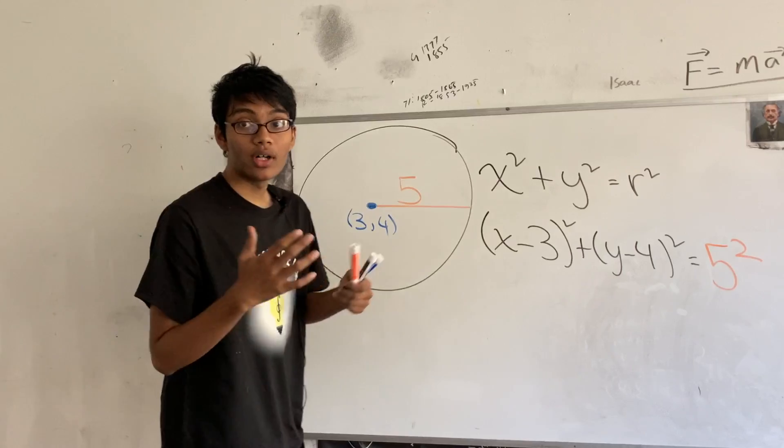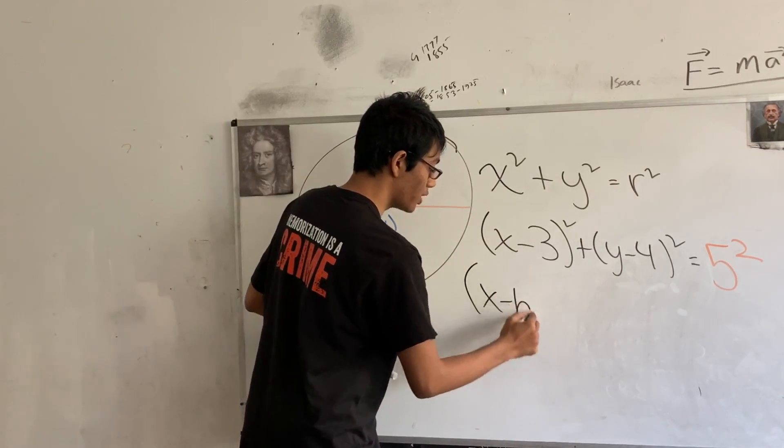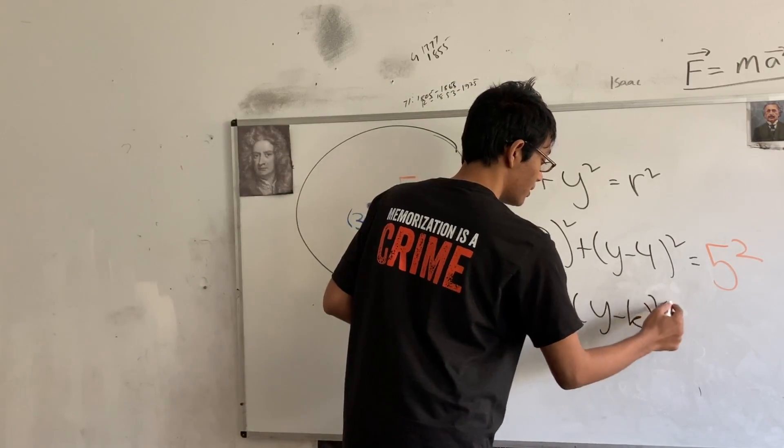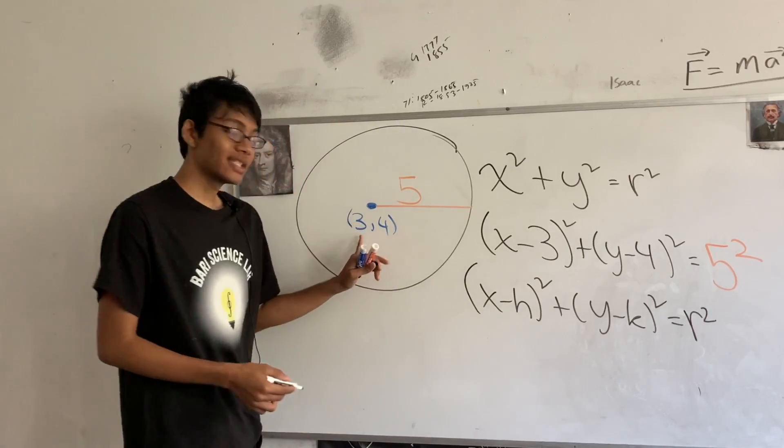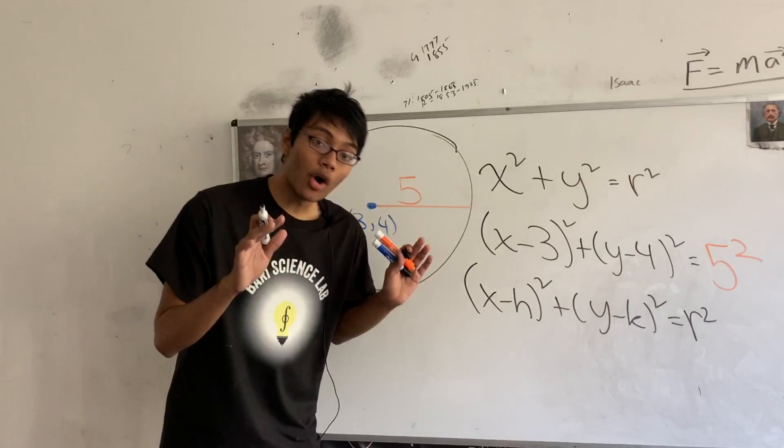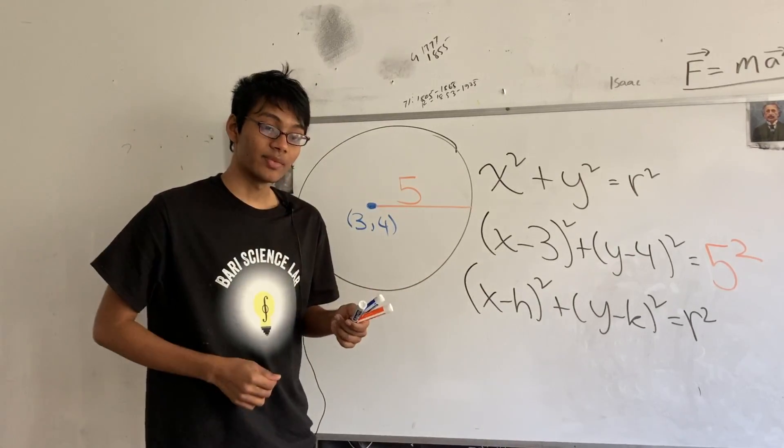So, what is our general equation for a circle? This circle is going to be as simple as x minus h squared plus y minus k squared equals r squared, where h comma k is the center of the circle, r is the radius of the circle, and where all the points that lie on the circle circumference are equidistant from the center.